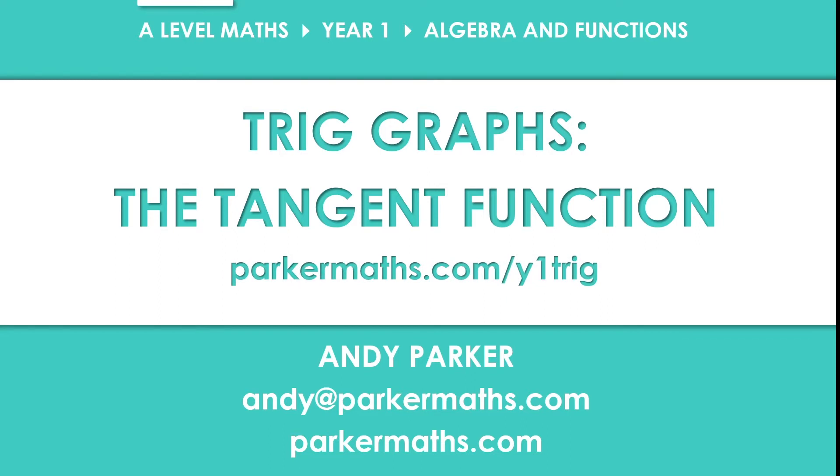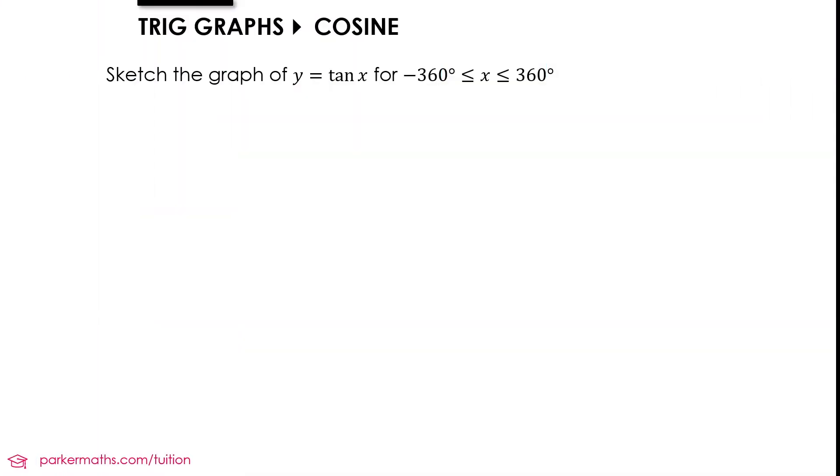We're going to sketch the graph of y equals tan x for minus 360 degrees is less than or equal to x is less than or equal to 360 degrees. To do that we're going to make use of the identity tan θ equals sin θ over cos θ. On screen we have the graph of y equals sin x in red and y equals cos x in blue.